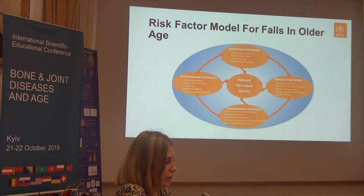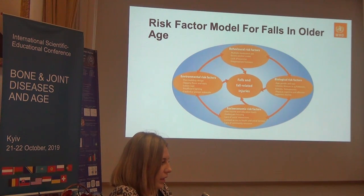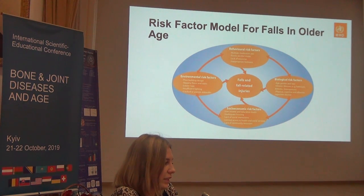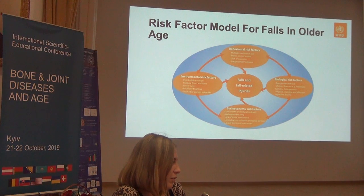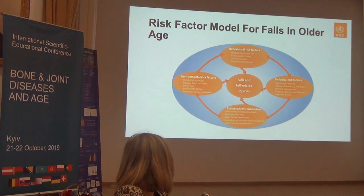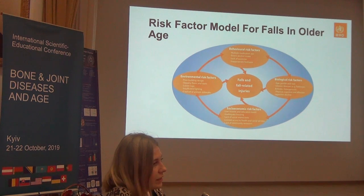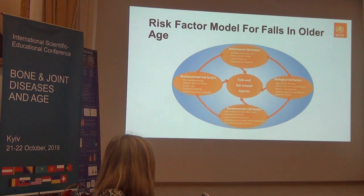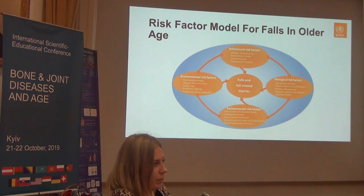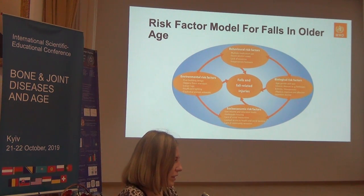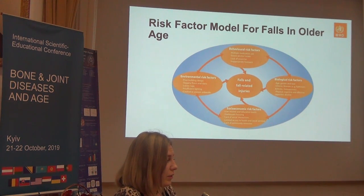The World Health Organization identifies fall risk factors, which can be divided into four parts. The first is behavioral risk factors — this means we should know all side effects of medicines, excess alcohol use, and lack of exercise. Another part is biological factors, such as gender, age, and chronic or acute diseases. The other parts are socioeconomic and environmental risk factors.